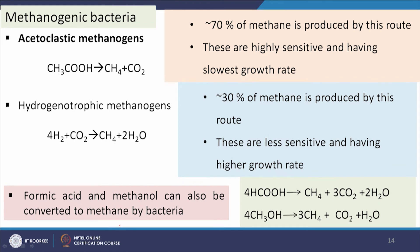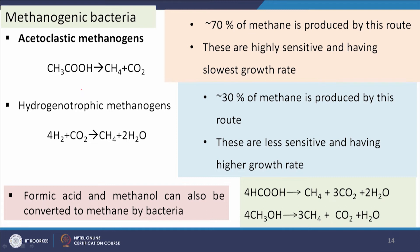Finally, methanogenic microorganisms produce methane from acetate or from CO2 and H2. Acetoclastic methanogens convert acetic acid or acetate to methane and CO2. Hydrogenotrophic methanogens combine H2 and CO2 to give CH4 + 2H2O. Formic acid and methanol can also be converted to methane by enteric bacteria. Approximately 70% of methane is produced by acetoclastic methanogens and 30% by hydrogenotrophic methanogens.